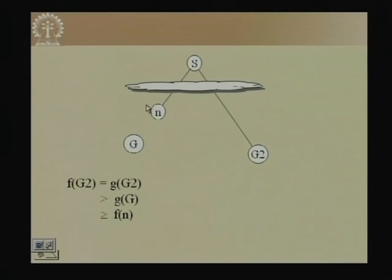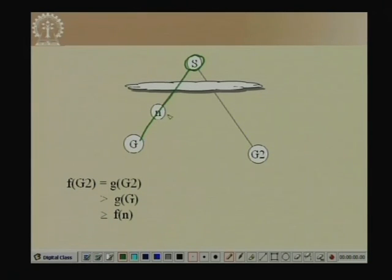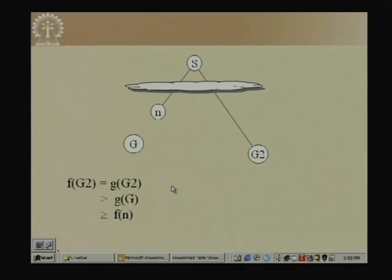This is a sketch of the proof. We showed that f(G2) = g(G2), which by assumption must be greater than g(G) — the optimal cost — and this leads to a contradiction. Therefore A* does find the optimum solution.